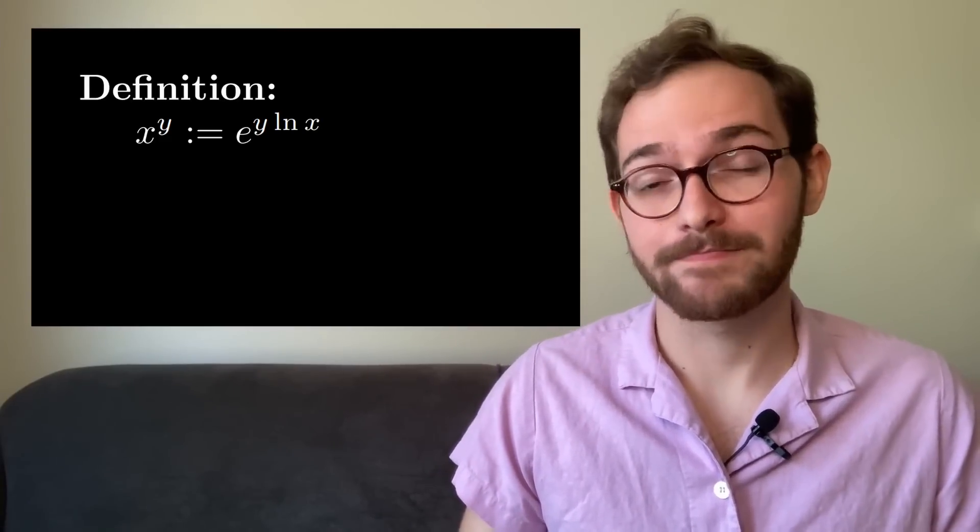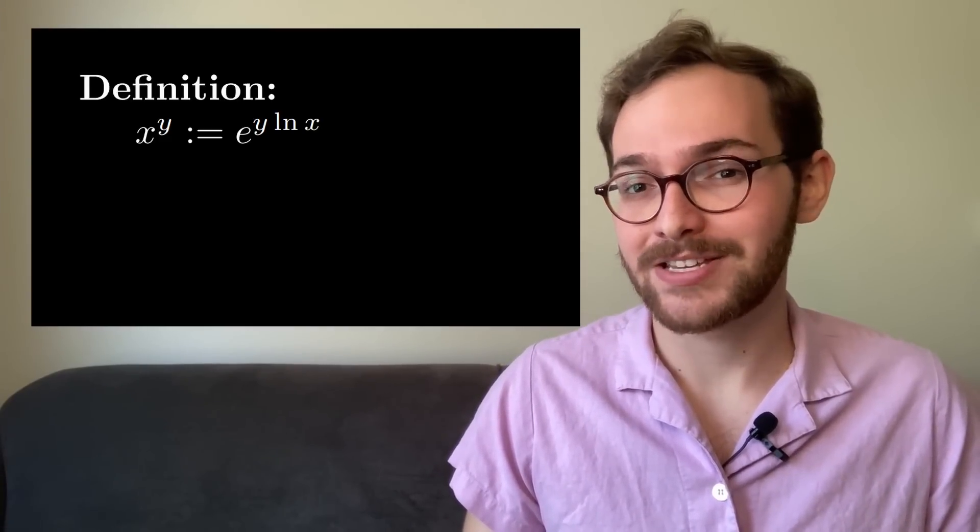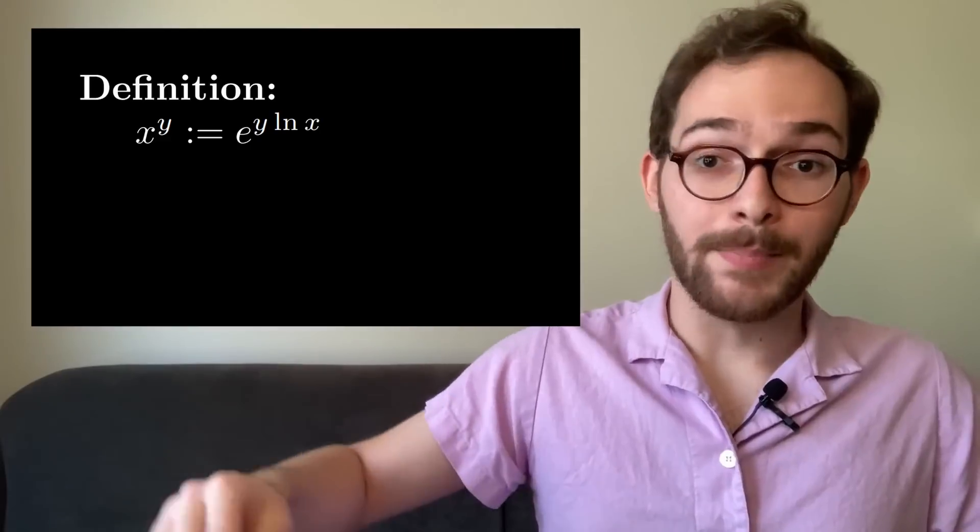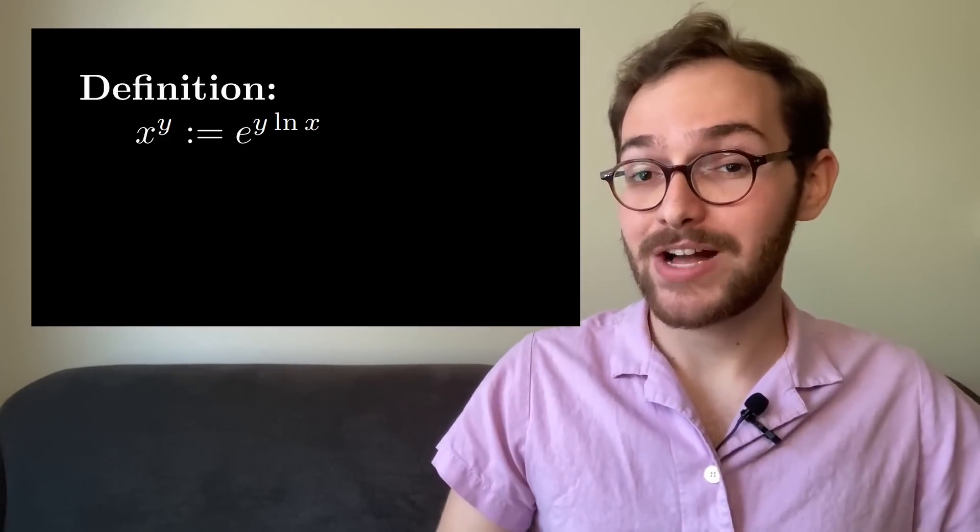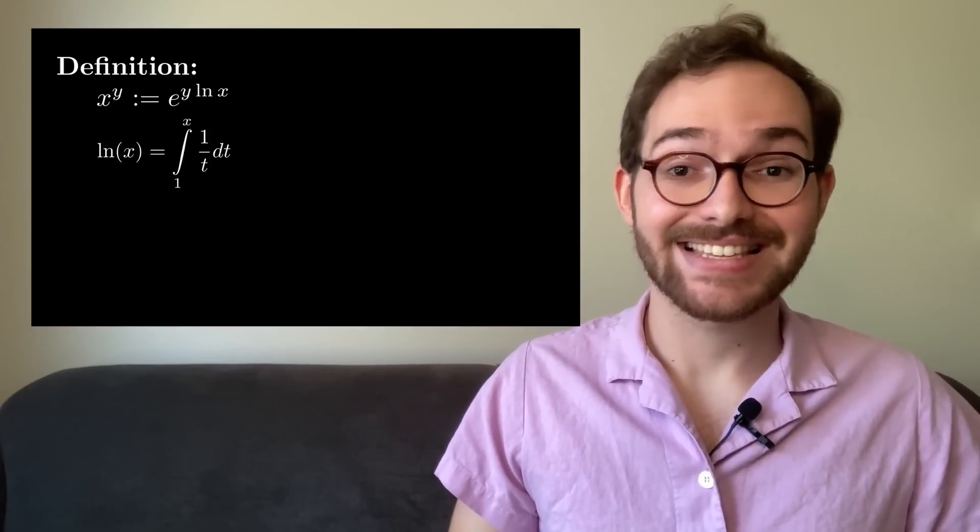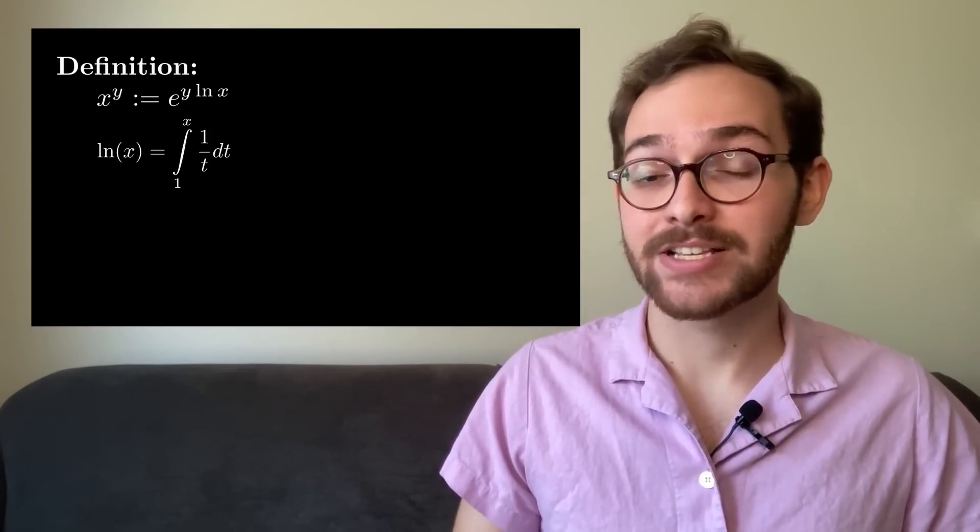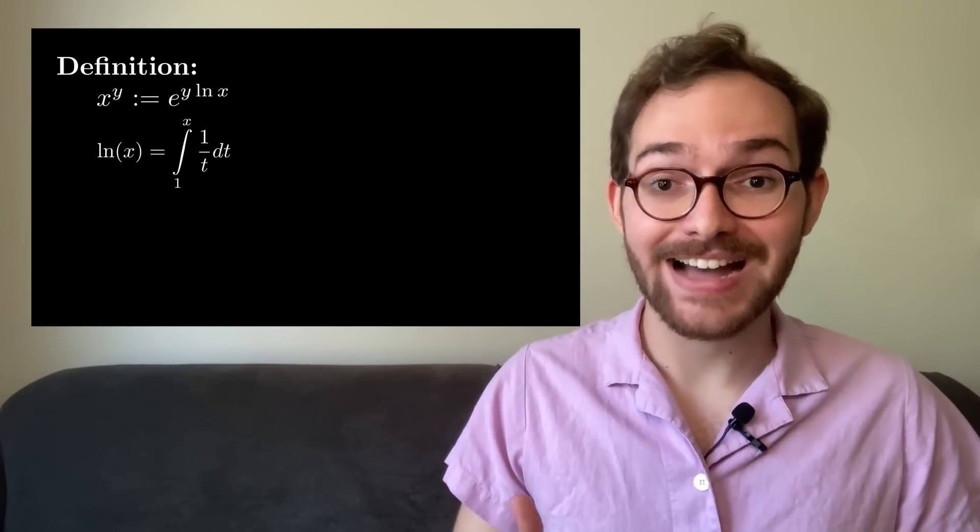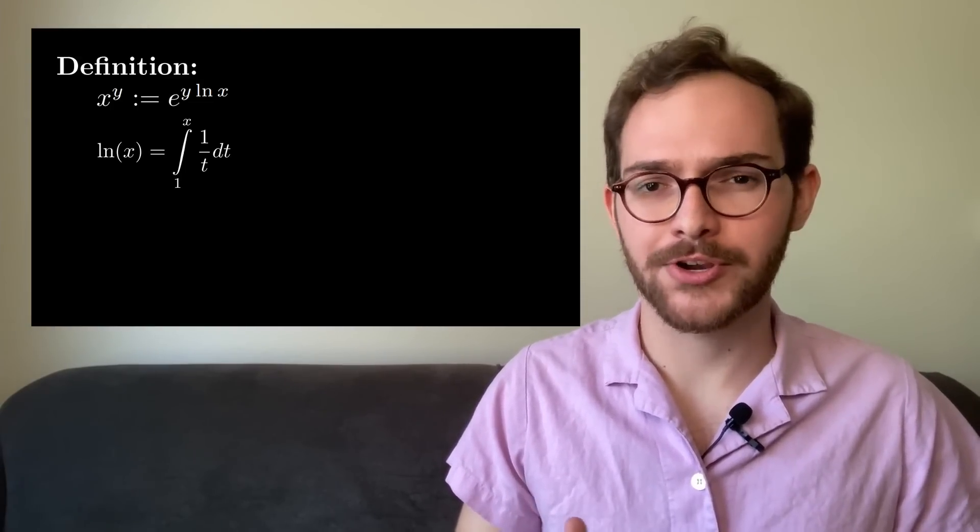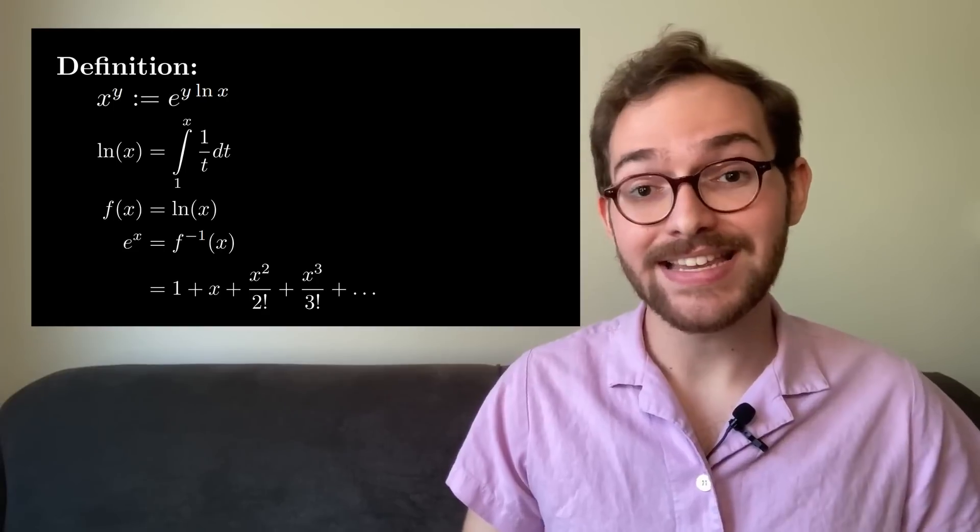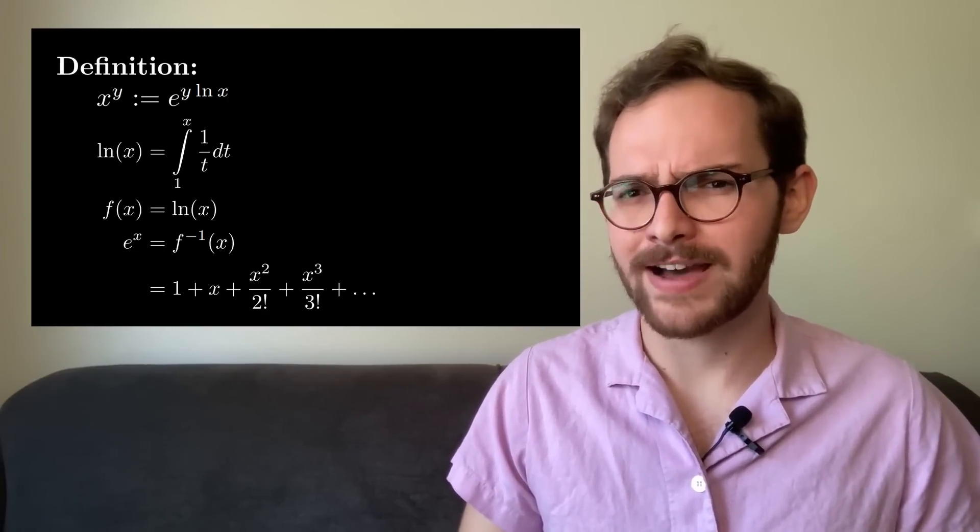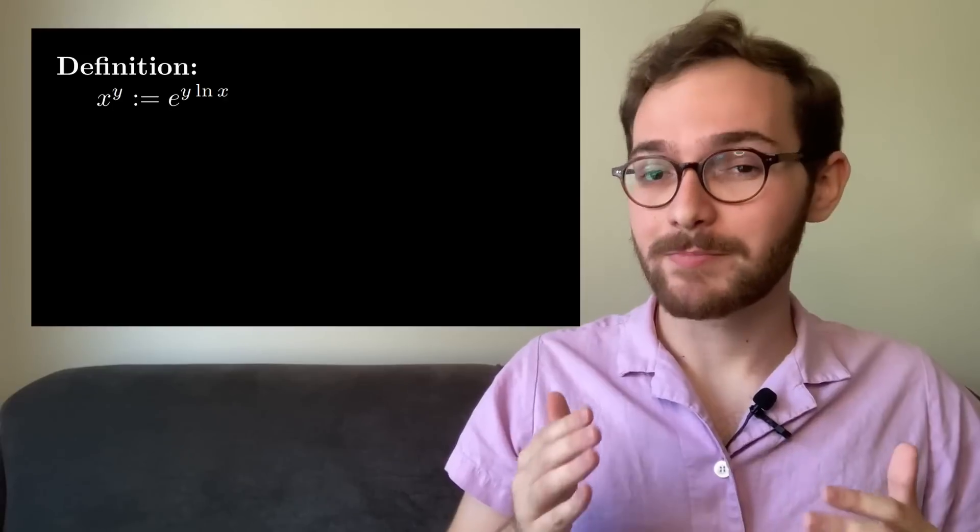But wait, that doesn't solve anything. If anything, it makes our problem harder—not only do I need to define exponents, now I also need to define logarithms. But there's good news from the world of calculus. ln x is the integral from 1 to x of 1 over t dt, and that's how we define ln x, so there's no circular reasoning. And e to the x is the inverse function of ln x, or we could define it by a power series.